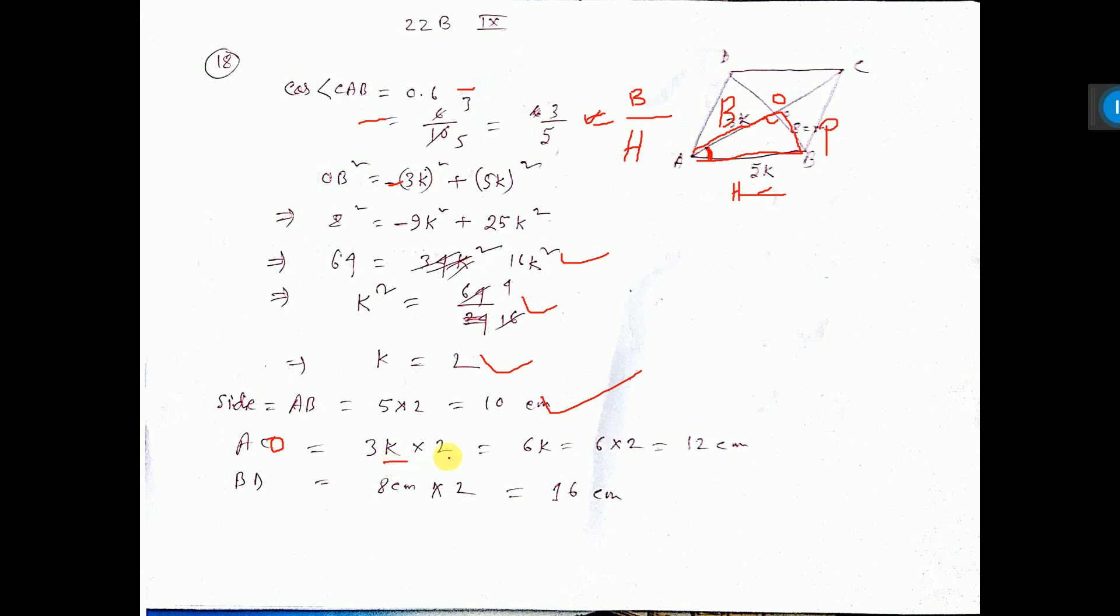Oh sorry, AO will be 3K, not 2. So 3K equal to 3 into K value 2, that is 6 cm. So if you want to find AC, okay, then I am rubbing. Then here it is written correctly. AC equal to 2 into AO. That is, I directly have to multiply. I am rubbing it and telling you.